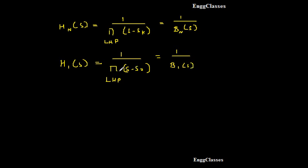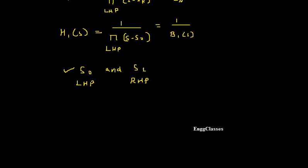So now, we get two poles that is S_0 and S_1 for order n equal to 1. S_0 is left half plane and S_1 is right half plane. And we need to consider for the stability, for the system to be stable, we have to consider only S_0 that is left half plane. What is S_0? Find the value and put it over here.